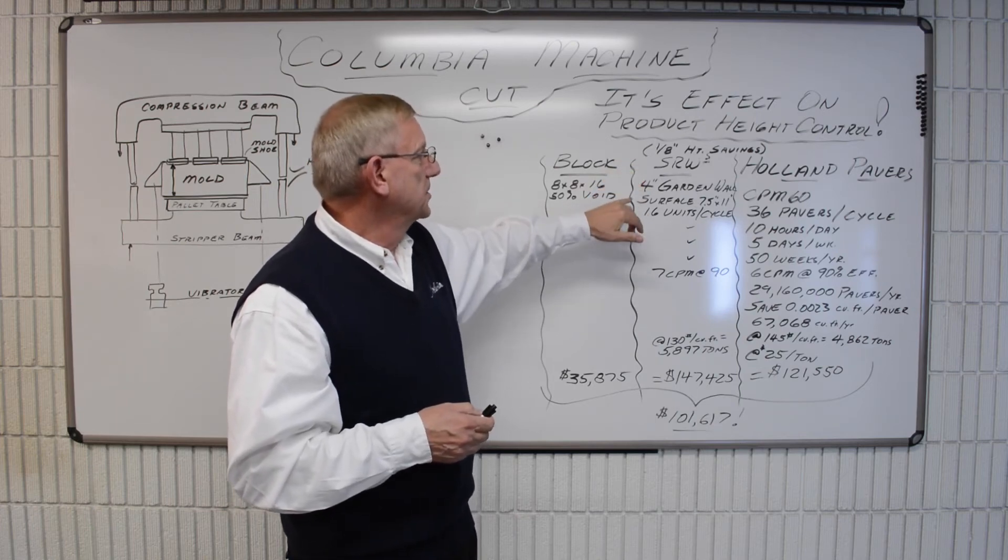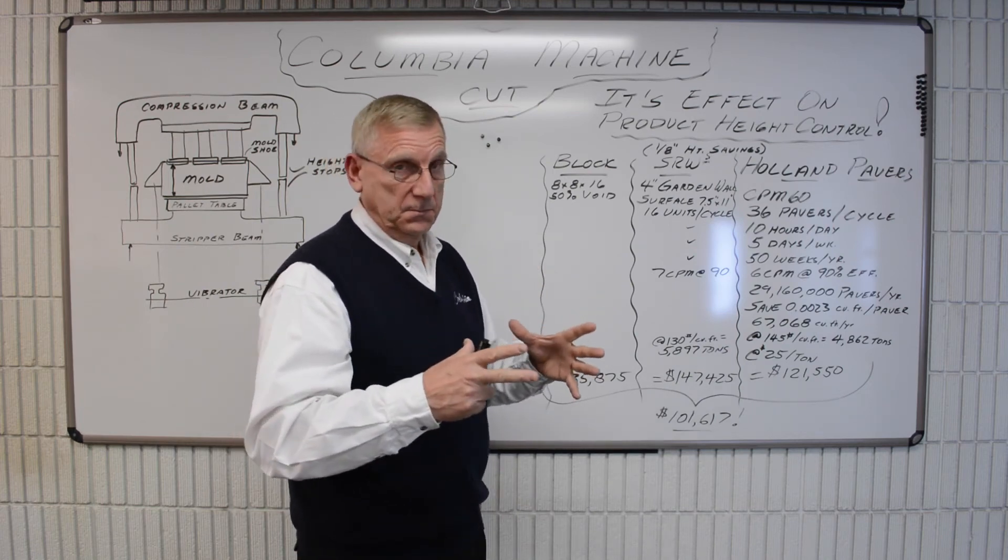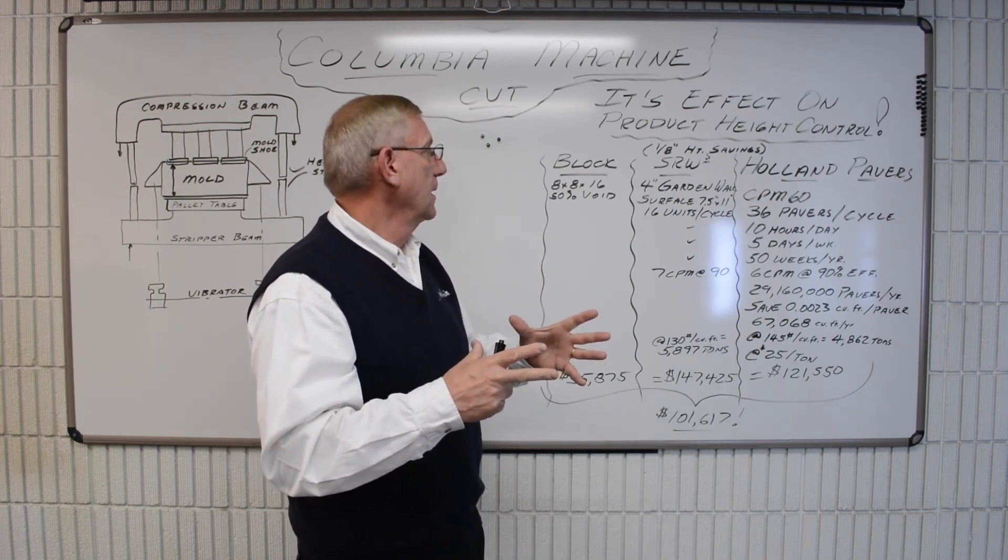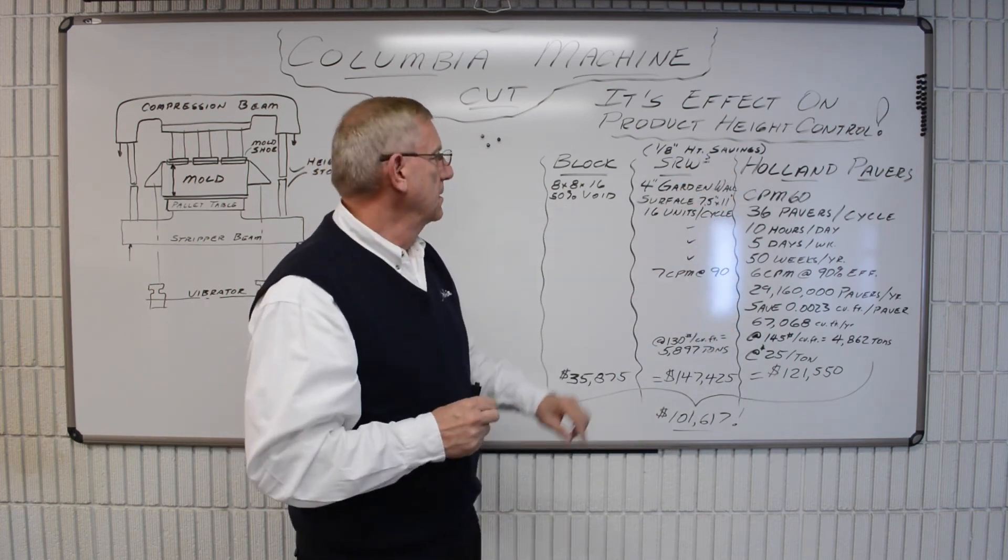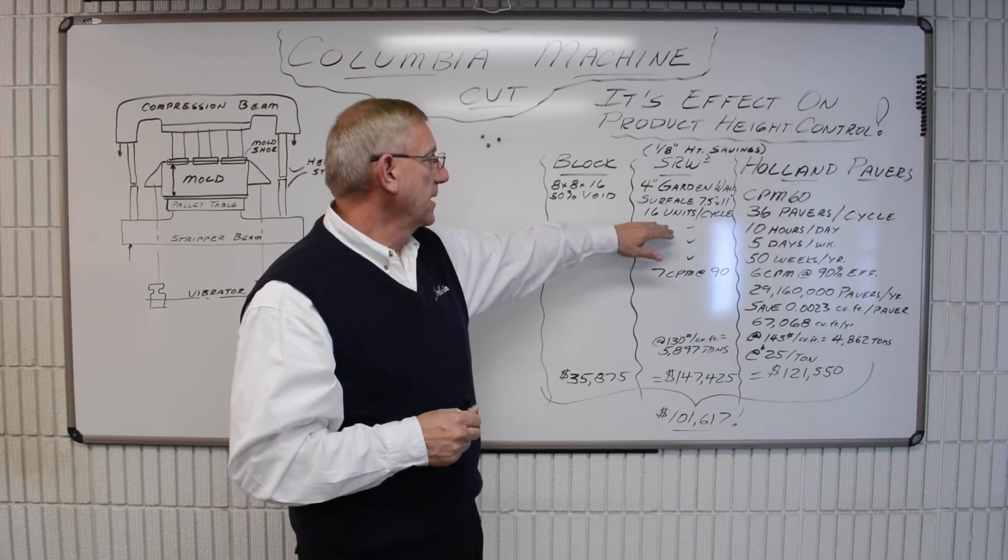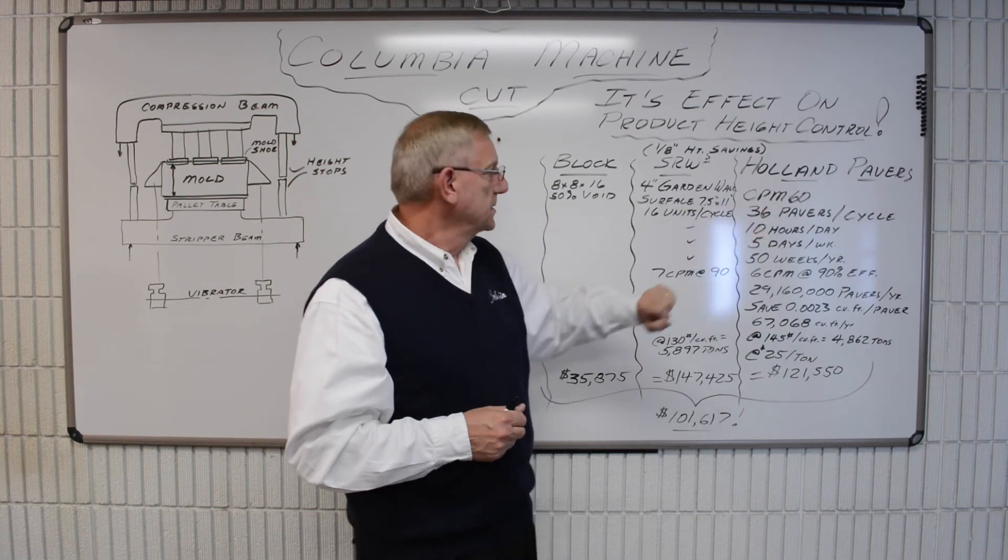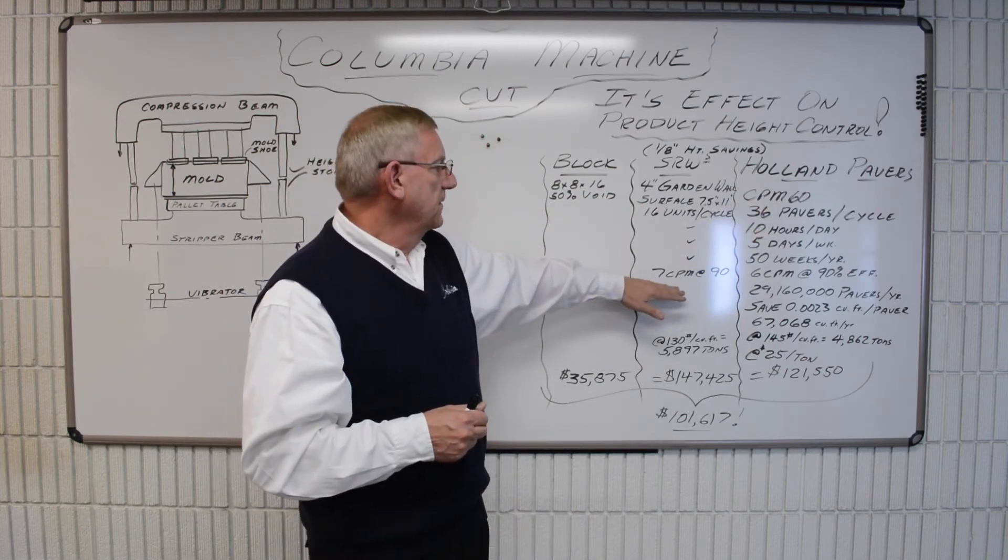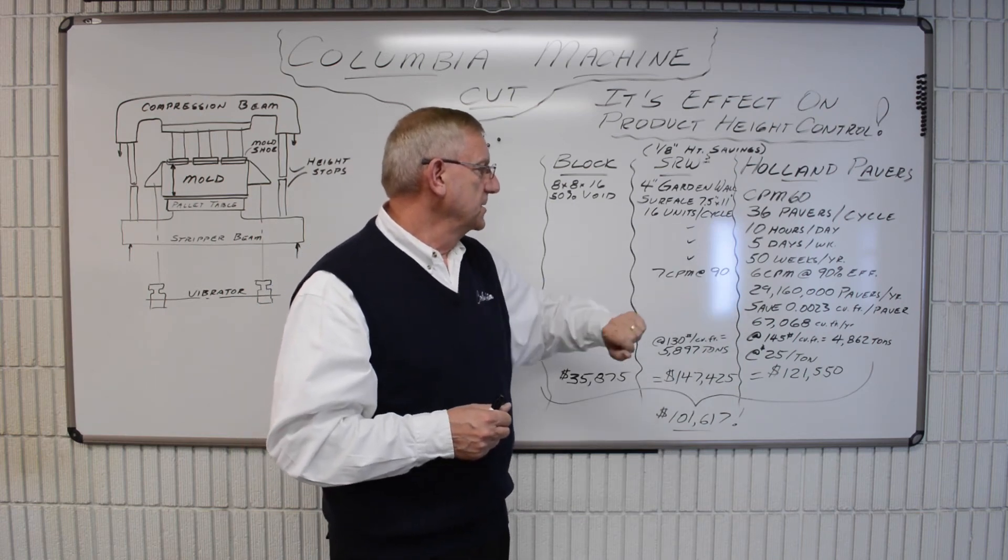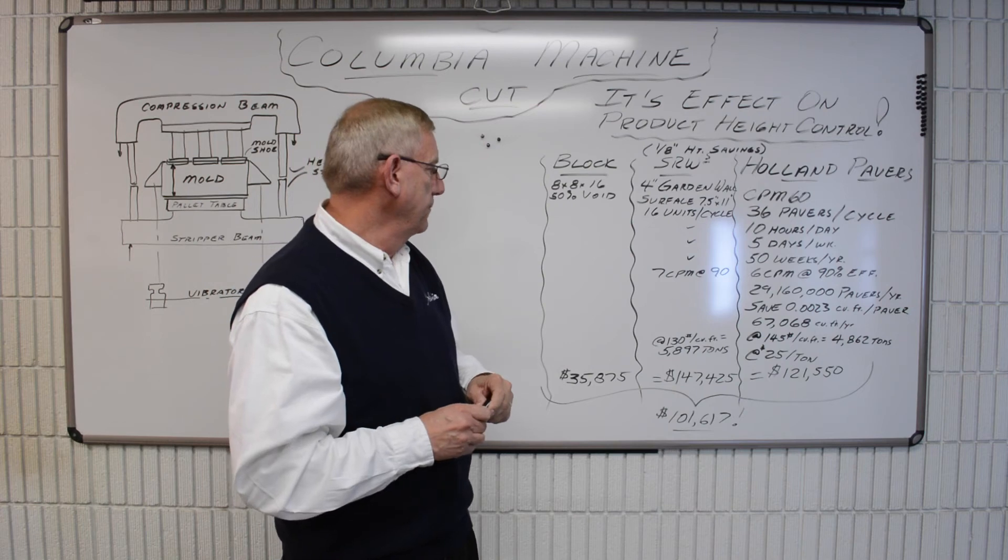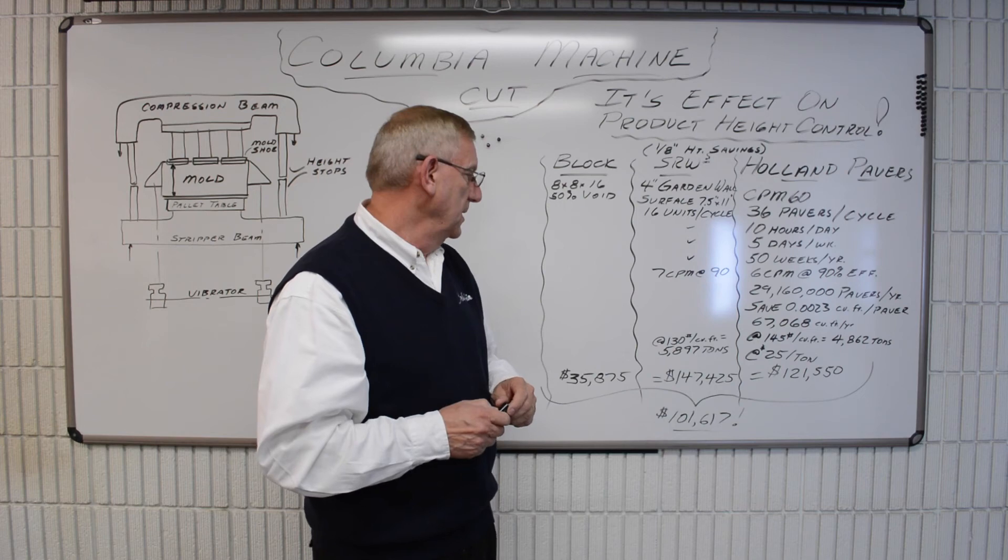And if we looked at just a 4 inch garden wall with a surface area of 7.5 by 11 inches, just a common size, applied all the same factors to it, 1/8 of an inch savings of material per cycle. We make 16 units of these per cycle on this same machine size. Seven cycles a minute would be more likely on these than the six, but we still use 90% efficiency. And the density wouldn't be as high, so 130 pounds per cubic foot density.